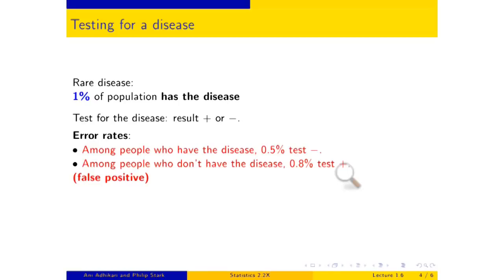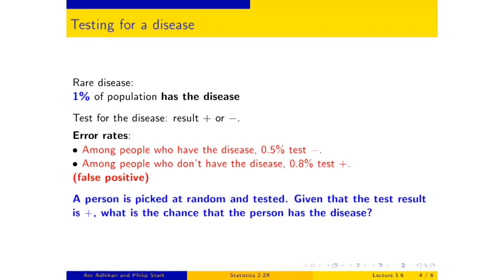There are two kinds of errors and they are distinct; most tests make both to some extent. The question of interest to most people is: they've taken the test and tested positive — do they have the disease? Specifically: you pick a person at random and test them; given that the test result is positive, what is the chance that the person actually has the disease? This is a two-stage experiment, so let's make a tree diagram.